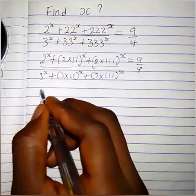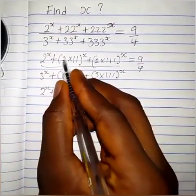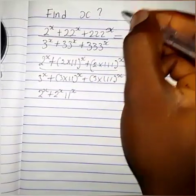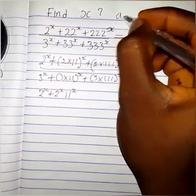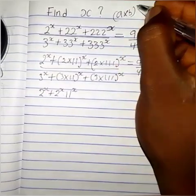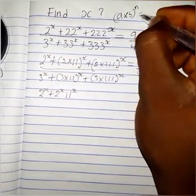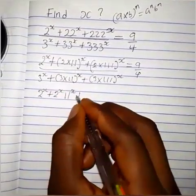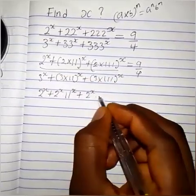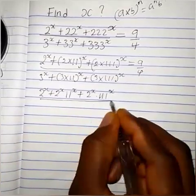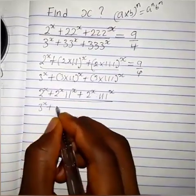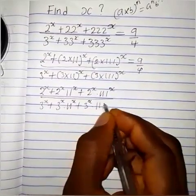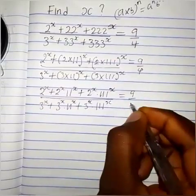So we have 2 raised to the power x plus this term, which can be written as 2 raised to the power x times 11 raised to the power x, because whenever we have (a times b) raised to the power n, we can rewrite it as a raised to the power n times b raised to the power n. So plus 2 raised to the power x times 111 raised to the power x, everything over 3 raised to the power x plus 3 raised to the power x times 111 raised to the power x, which equals 9 over 4.